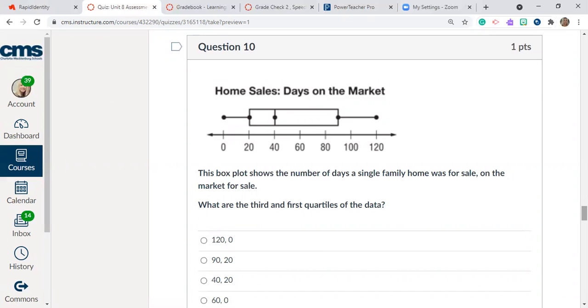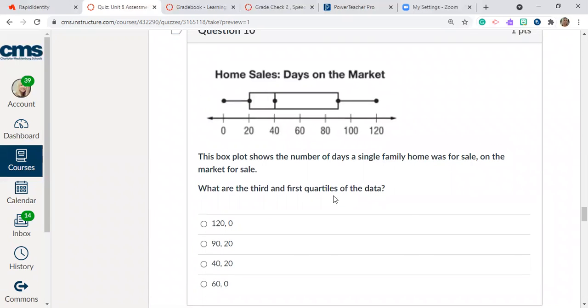Question number 10. This box plot shows the number of days a single family home was for sale on the market. So we have home sales, days on the market. All right, so we have all the way from zero to 120 days. What are the third and first quartiles of the data? So what number would fall at the third and first quartile in this set of data? 120 and zero, 90 and 20, 40 and 20, 60 and zero. Remember we're looking for the first, I'm sorry, the third and the first in that order, the third and then the first.